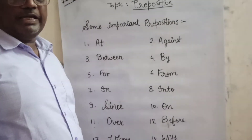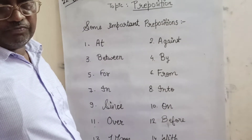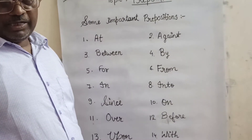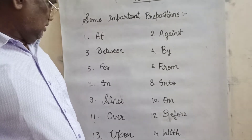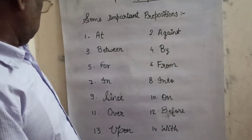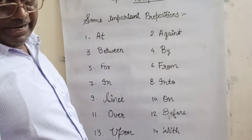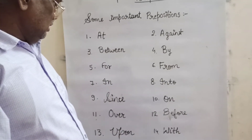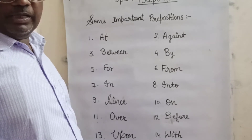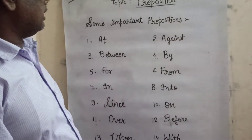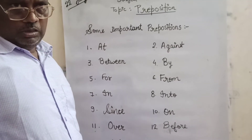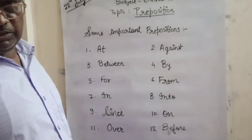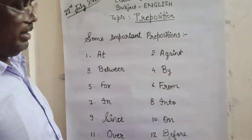'Over': The sky is over. The birds fly over the sky. 'Upon': The cat jumped upon the table. 'Against': My house is against her house. Her house is against my house.